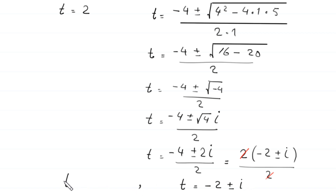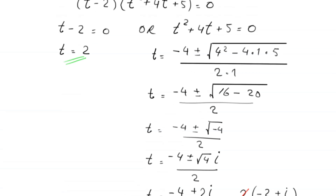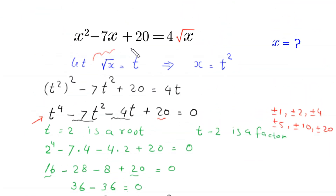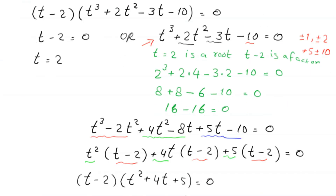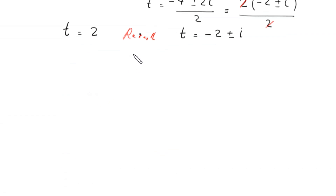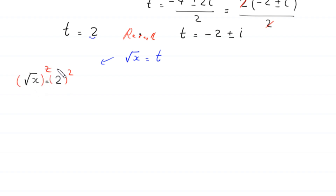So the values of t found are: t equals 2, and t equals negative 2 plus or minus i. Recalling that we supposed root x equals t: when t equals 2, root x equals 2, and squaring both sides gives x equals 4. When t equals negative 2 plus or minus i, root x equals negative 2 plus or minus i, and we square both sides.